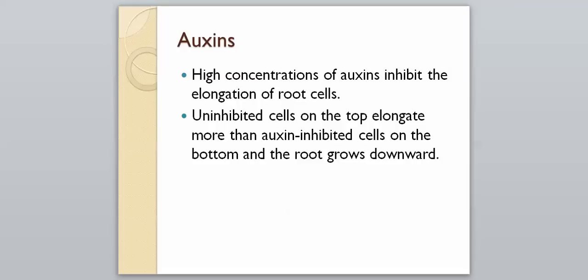Some more interesting things about auxins: when they're in high concentrations, they will inhibit the elongation of root cells. High concentrations stimulate growth in the stem but inhibit the elongation of root cells. Uninhibited cells on the top elongate more than auxin-inhibited cells on the bottom, and the root grows downward. So there'll be a lot of auxins at the top of the root, meaning roots won't grow up. With little auxin at the bottom, they grow away from the area where there is a lot of auxins.